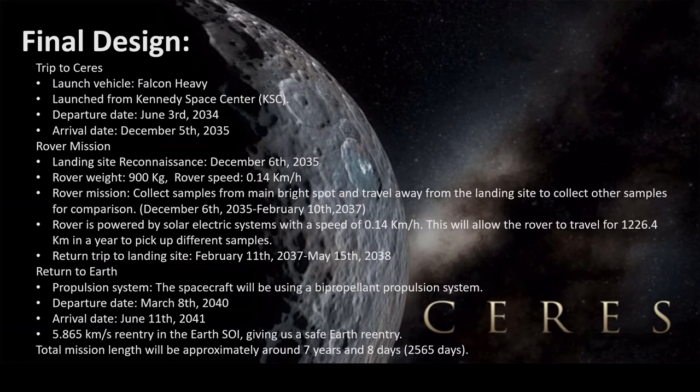The spacecraft will use a bi-propellant propulsion system to leave Ceres and arrive at Earth. Our departure date would be March 8, 2040, and our arrival date will be June 11, 2041. Our delta-V going into Earth is 5.865 kilometers per second for re-entry, giving us a safe Earth re-entry. The total mission length will be approximately 7 years and 8 days, or 2,565 days.